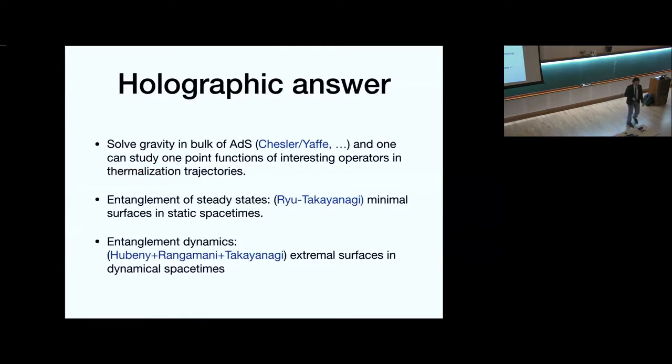If you do holography, we actually have some answers to some of these questions. So Chesler and Jaffe taught us how to put AdS dynamically on a computer and how to study one-point functions of interesting operators. And then Ryu-Takayanagi taught us how to compute entropies for static states, and this was generalized to these Hubini-Rengamani-Takyanagi surfaces, which basically tell us how to solve some problem at large n by doing extremal surfaces in gravity. So they reduce the problem to a classical problem. And I want to understand this.